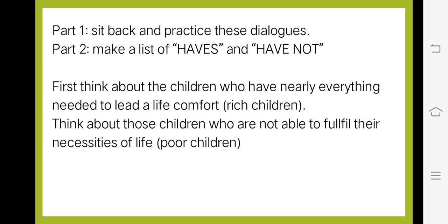The next part is: make a list of 'haves' and 'have nots.' First, think about the children who have nearly everything needed to lead a comfortable life — that means rich children who have everything to live a good life.